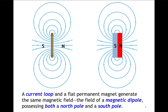A current loop and a flat permanent magnet generate the same magnetic field — that is the field of a magnetic dipole, possessing both a north pole and a south pole. In other words, we could say that a current-carrying loop acts as a magnetic dipole.